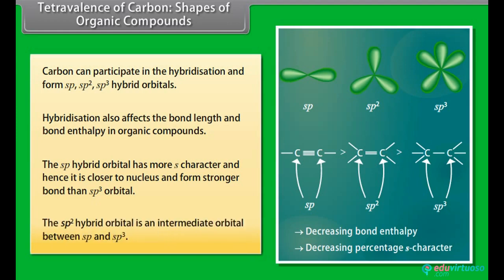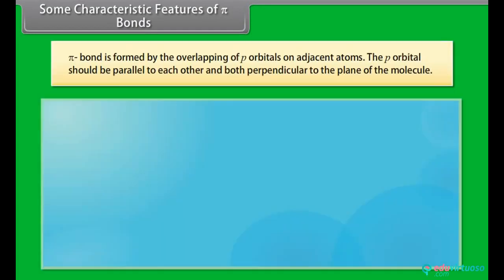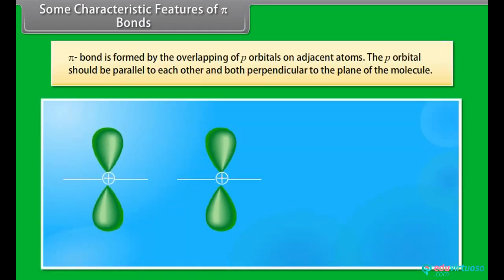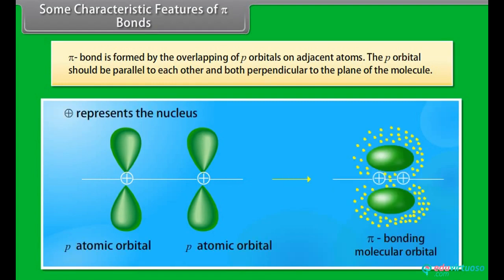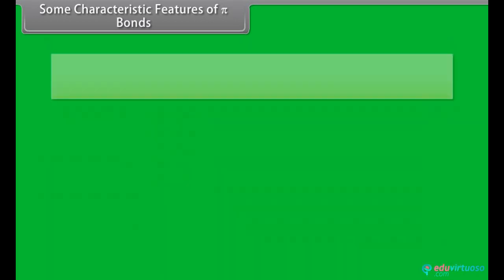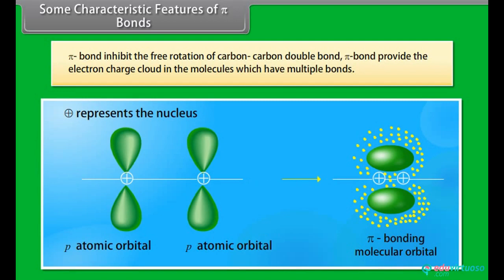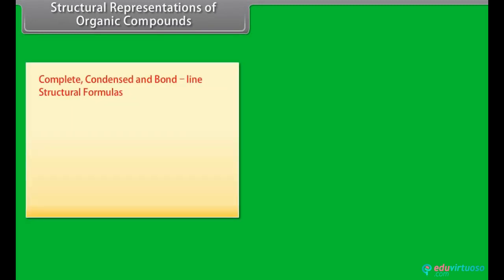In organic compounds, the sp hybrid orbital has more s-character and hence it is closer to the nucleus and forms a stronger bond than the sp3 orbital. The sp2 hybrid orbital is an intermediate orbital between sp and sp3. Some characteristic features of pi bonds: a pi bond is formed by the overlapping of p-orbitals on adjacent atoms. The p-orbitals should be parallel to each other and both perpendicular to the plane of the molecule. Pi bond inhibits the free rotation of the carbon-carbon double bond, and pi bond provides the electron charge cloud in molecules which have multiple bonds.